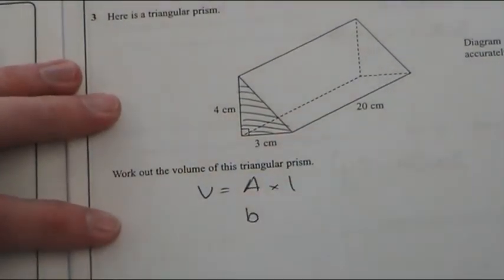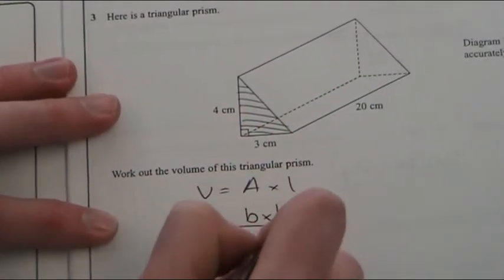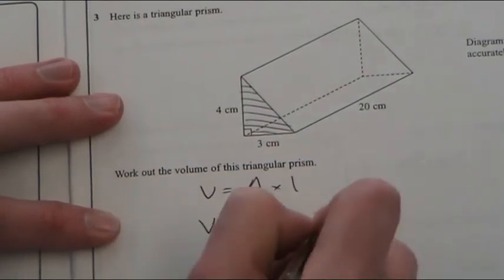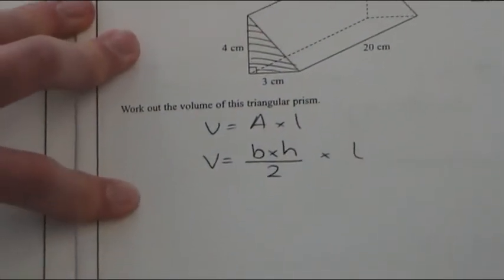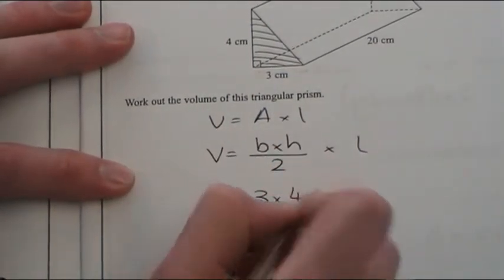The area of a triangle is the base of the triangle times the height of the triangle, halved. So, the base of the triangle is three.